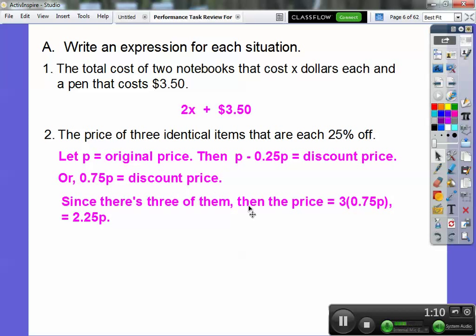Since there's three of them, we multiply by three. So 3 times 0.75P. Don't forget the P. So it's 2.25P for all three prices.